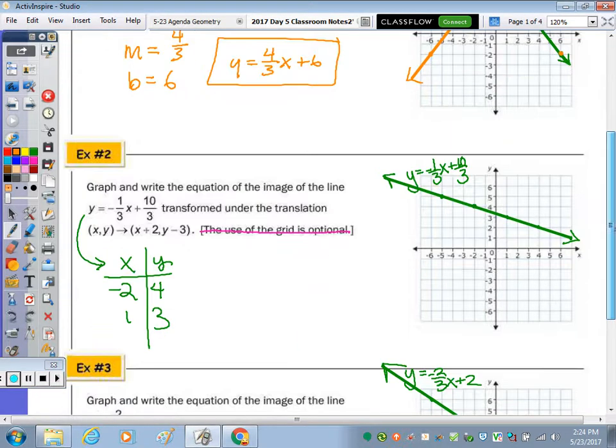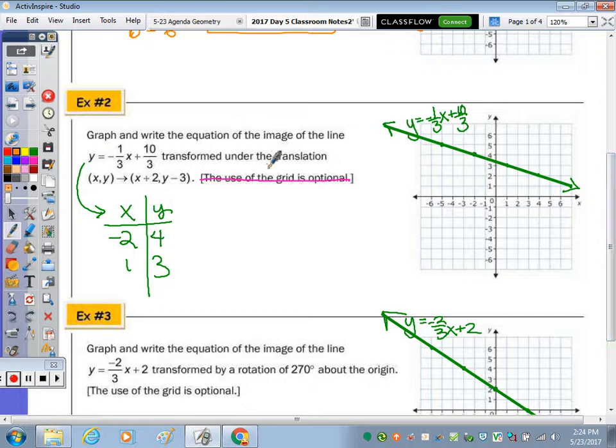Alright, on to number 2. We're going to take this line, and we're going to translate. In terms of right, left, up, down, how are you going to move every point on the line? No, x plus 2 means you're going to go right 2 units, and then y minus 3 is down 3 units. So you take each point, say I pick this point, which is 1, 3, you're going to go right 2, 1, 2, down 1, 2, 3. Take this point, right 2, down 1, 2, 3.